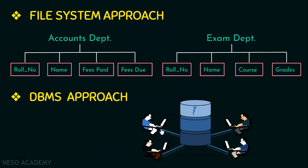Data like student roll number, student name, fees paid, fees due, and the grades they have received can be stored in this single repository, and any number of users can access this repository and view whatever data they want. Hence there is no duplication of data. So that is why we prefer DBMS over the traditional file system approach. Hope you all have understood the difference between the file system approach and the DBMS approach.